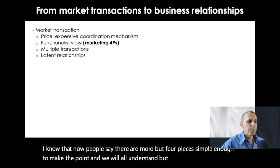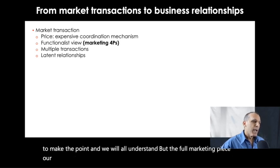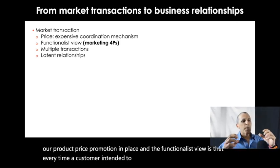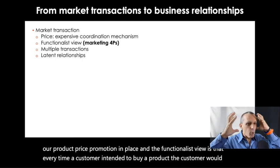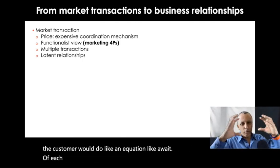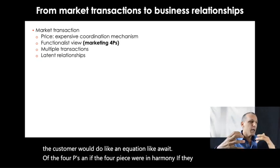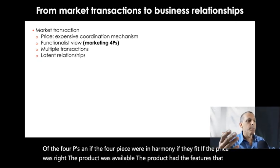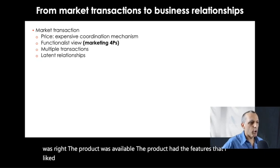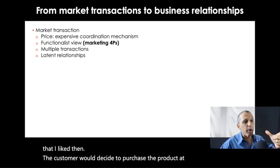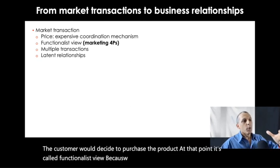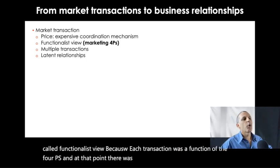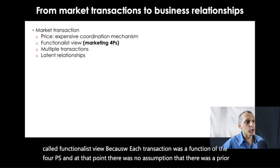The four marketing P's are product, price, promotion, and place. The functionalist view is that every time a customer intended to buy a product, the customer would do like an equation — a weighting of each of the four P's. If the four P's were in harmony, if the price was right, the product was available, and the product had the features the customer liked, then the customer would decide to purchase. It's called the functionalist view because each transaction was a function of the four P's, with no assumption of a prior like or dislike from the customer.